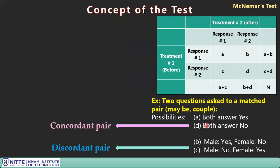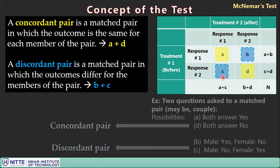When both members of a pair give the same outcome — both yes or both no — these are called concordant pairs (cells a and d), with total concordant pairs = a + d. When the outcomes differ within a pair, these are called discordant pairs (cells b and c), with total discordant pairs = b + c. Discordant pairs are of greatest interest for the analysis.